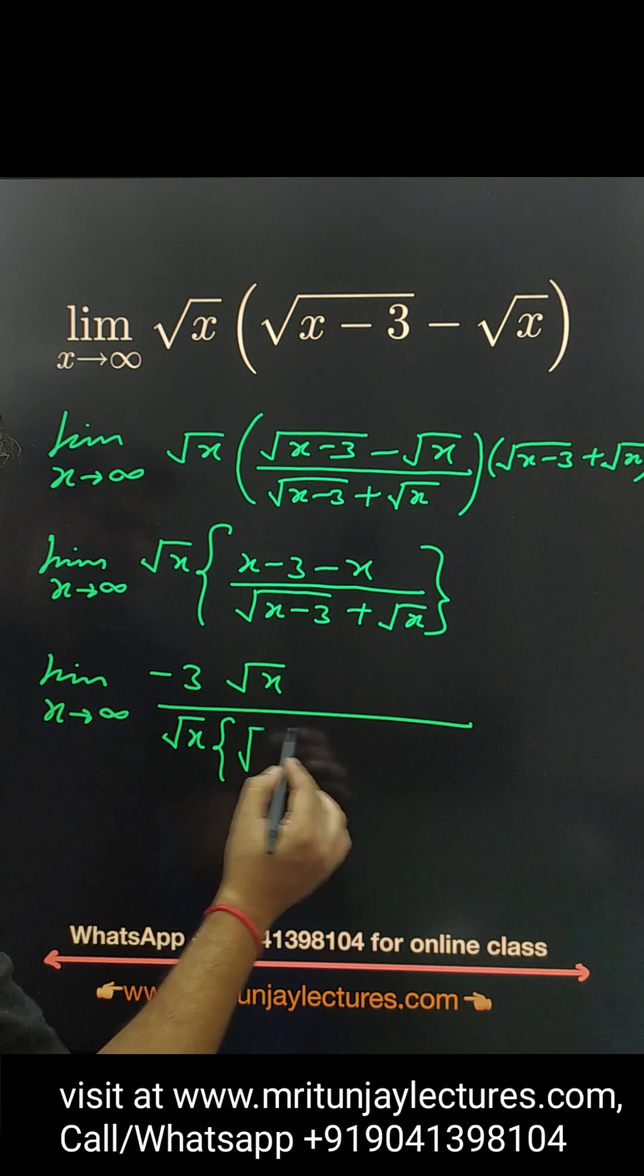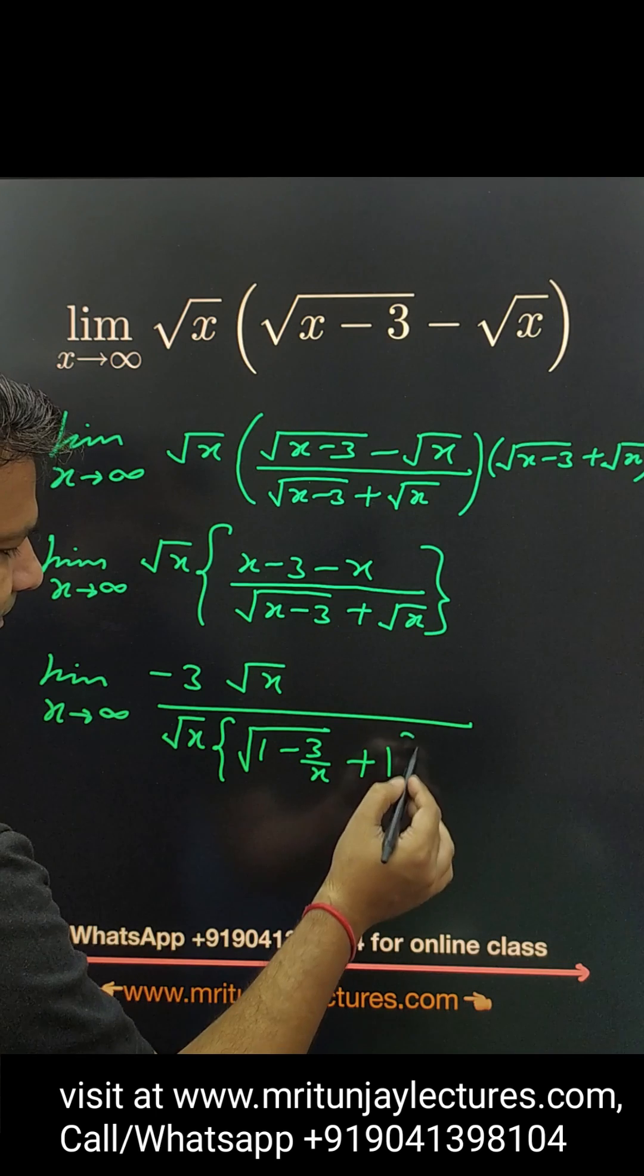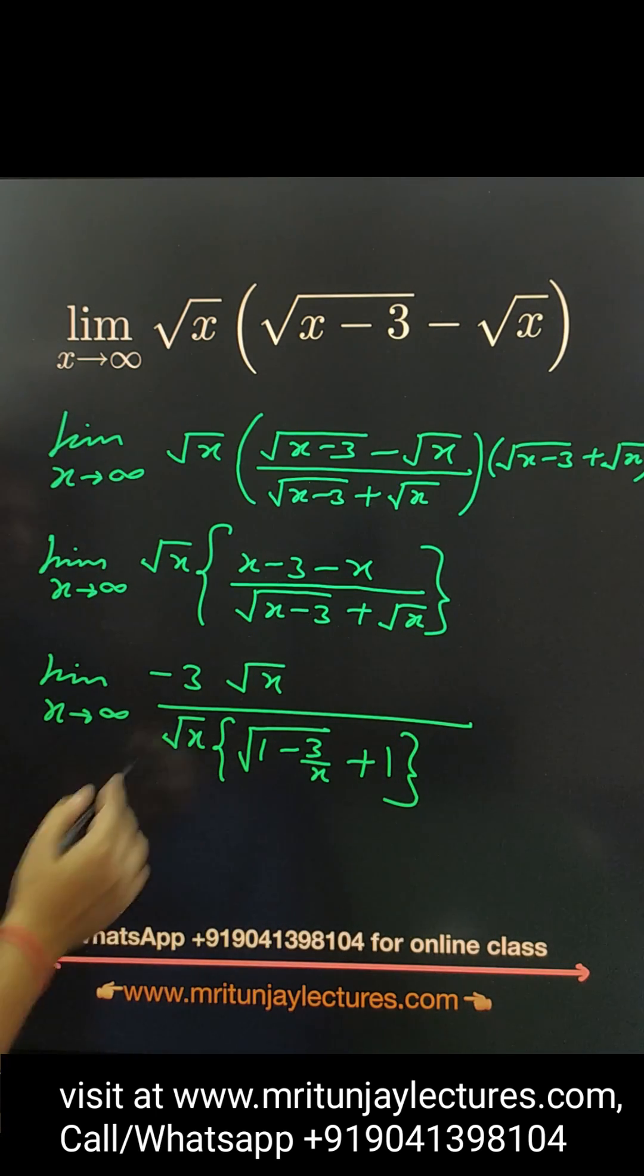Then what about that value? Simply here 1 minus 3 by x plus 1. After root x root x cancel.